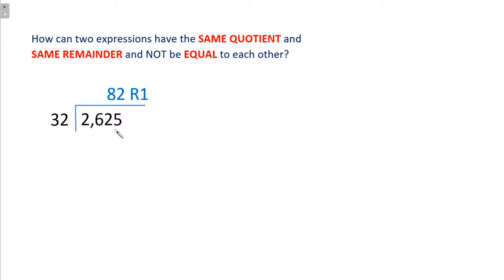So all we have to do is come up with another problem that has that same exact answer that is different. And that's not too bad to do. Let's show you how. Let's start multiplying. We know that we want 82 to be the quotient, and we want 1 as the remainder.